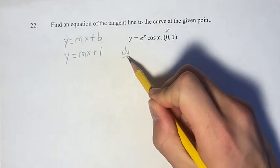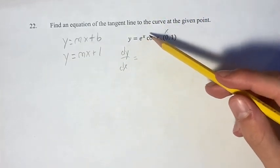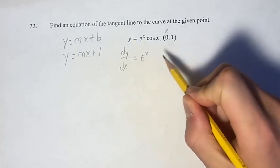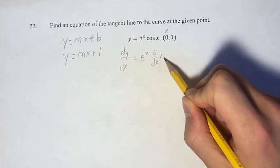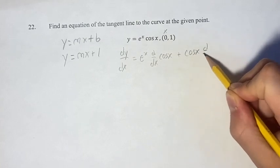Our derivative dy/dx is going to be, so we have e to the x times cosine x, so we're going to have to use the product rule. We're going to have e to the x times the derivative of cosine x plus cosine x times the derivative of e to the x.